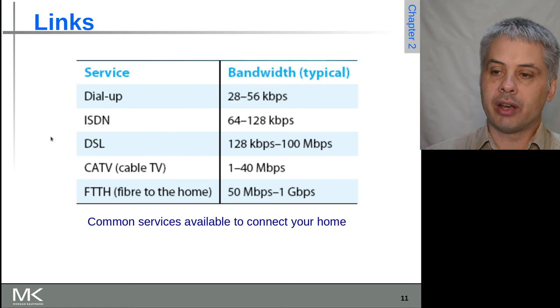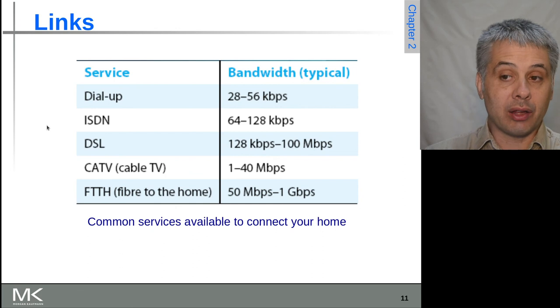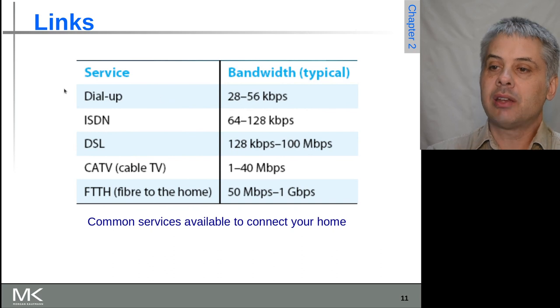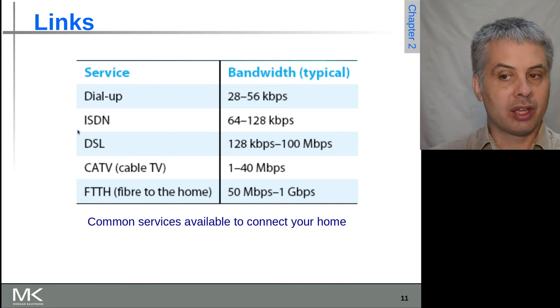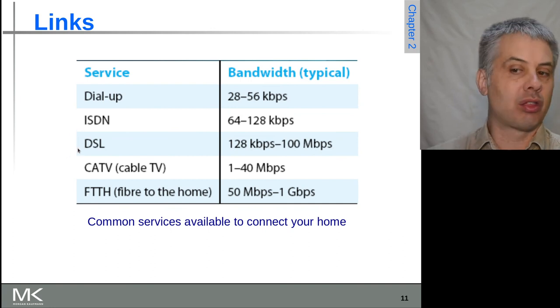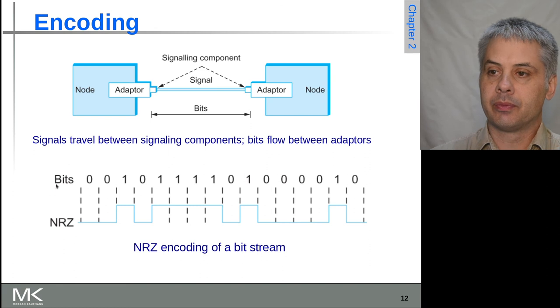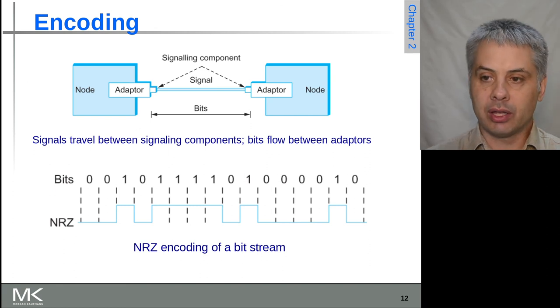So it depends on the kind of access you have. Again, what's not listed here is the wireless connection mechanism. So we know of course 2G cellular was about dial-up speed, 3G was between ISDN and DSL, 4G is pretty much up there with DSL, and 5G is aiming to get that fiber-like kind of speed to the home. Okay, and we'll come back to encoding in the next video.